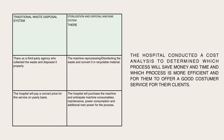The second option is the sterilization and disposal machine system. The machine reprocesses or disinfects the waste and converts it to recyclable material. The hospital will purchase the machine and anticipate machine consumables, maintenance, power consumption, and additional manpower for the process — for example, generators and solar panels to reduce electricity costs.